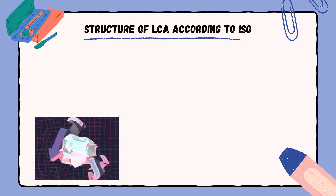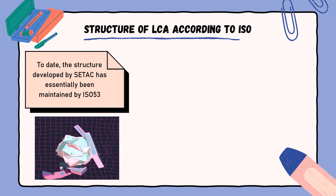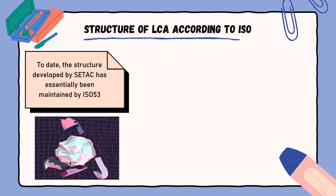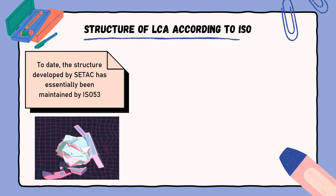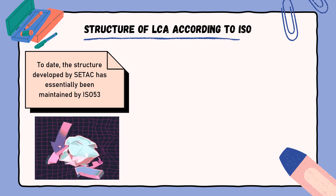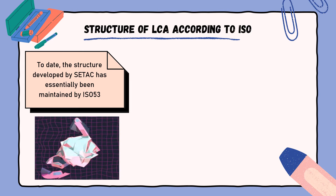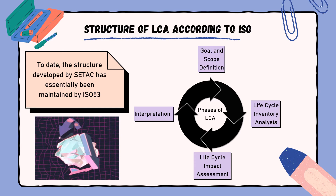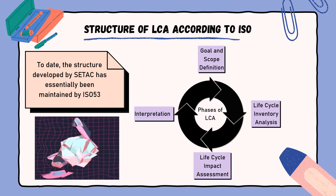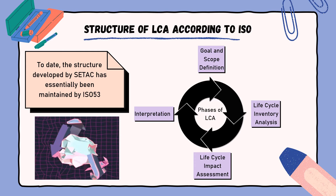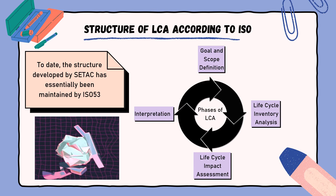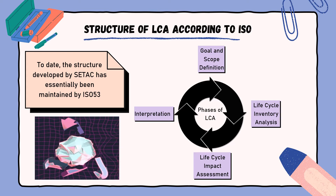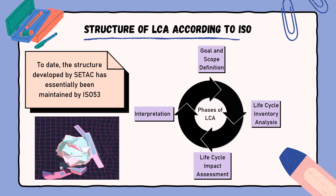Structure of LCA according to ISO: to date, the structure developed by SETAC has essentially been maintained by ISO, except for improvement assessment which was replaced by interpretation. The optimization of product systems was not adopted as standard content by ISO but was listed among other applications. The phases of LCA have been renamed, and the following terms are now internationally mandatory: goal and scope definition, life cycle inventory analysis, life cycle impact assessment, and interpretation.